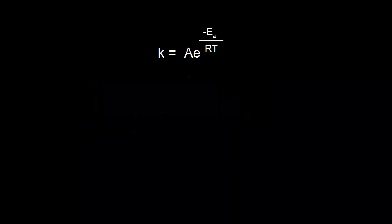We've already seen one form of the Arrhenius equation, which says that the rate constant k is equal to the frequency factor A times e to the negative Ea over RT, where Ea is the activation energy, R is the gas constant, and T is the temperature.